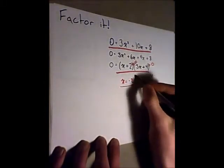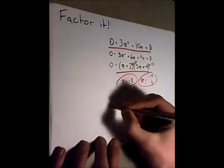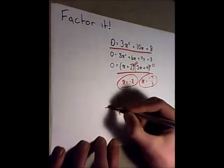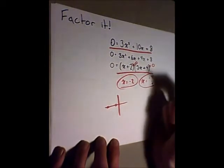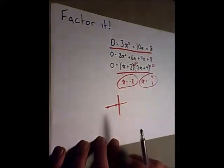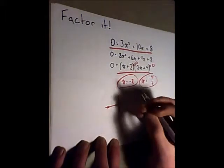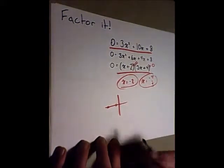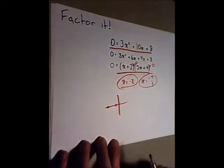And so these are our x-intercepts. If we were to draw the graph, the x-intercepts would be here and here. Now, from this equation we don't know the vertex point, but we do know the roots, which in chapter 4 is all that you're asked to find out.